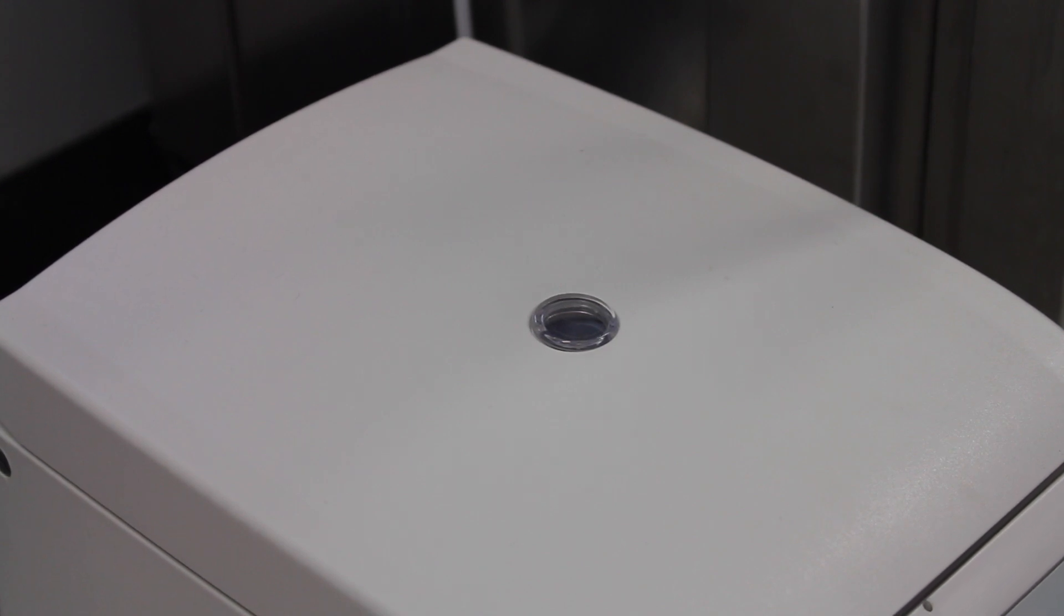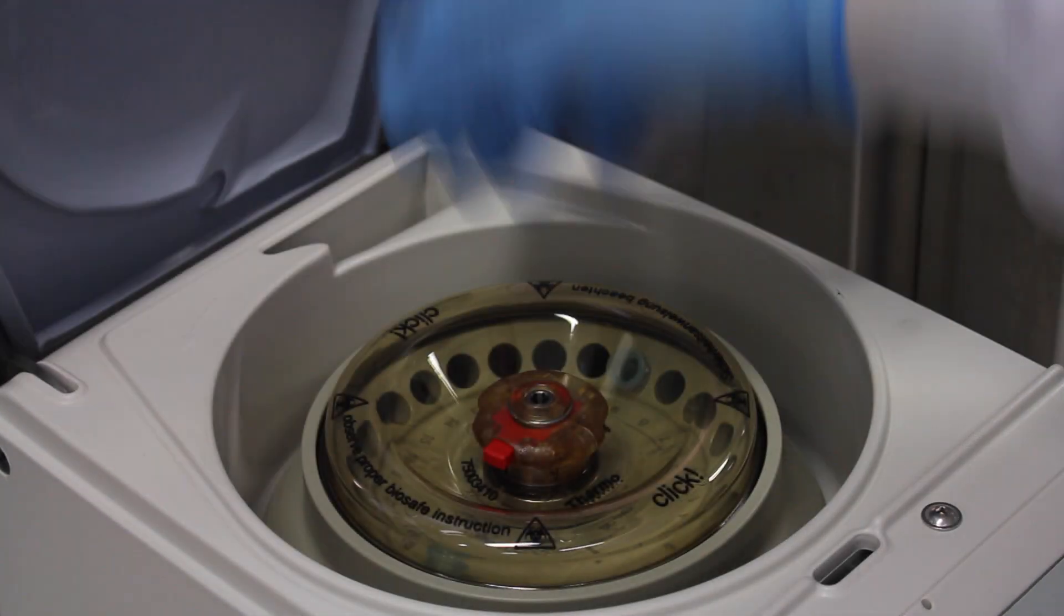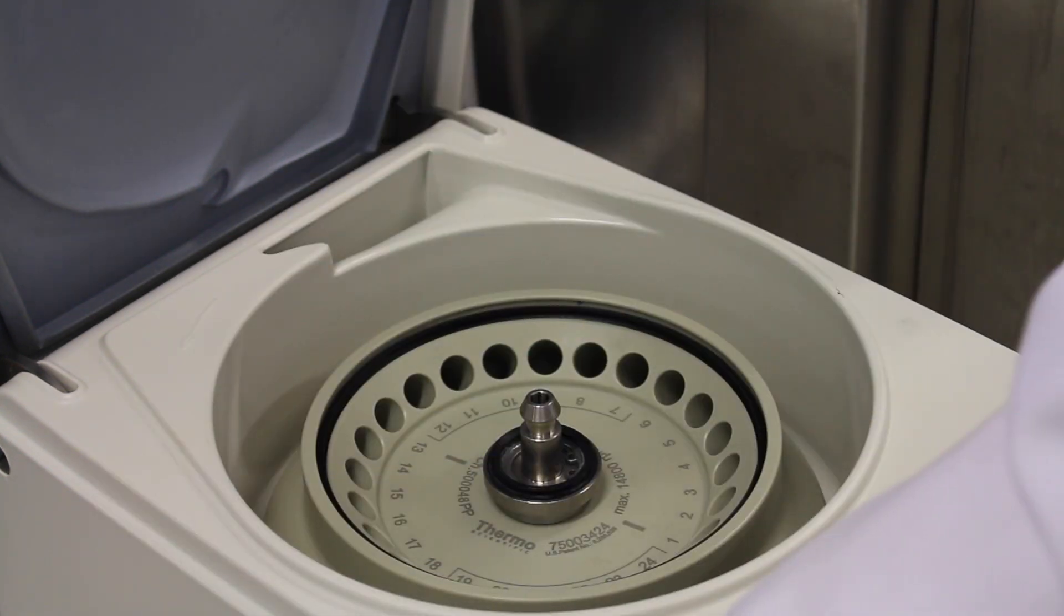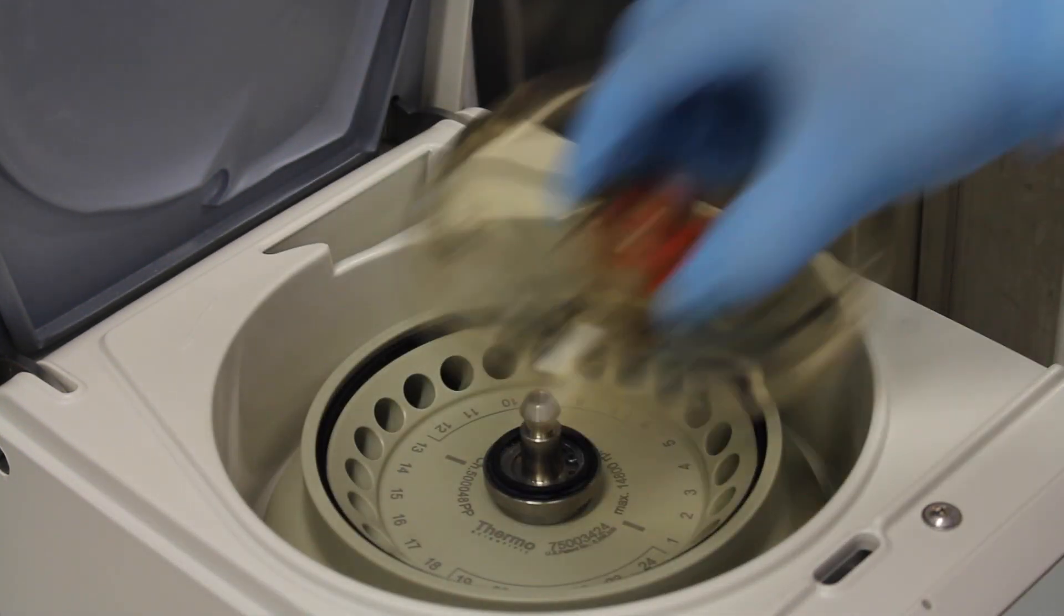In this tutorial we prepared two samples in order to balance the centrifuge. An alternative to this is to prepare one sample and to balance the centrifuge with a tube containing an equal volume of water.